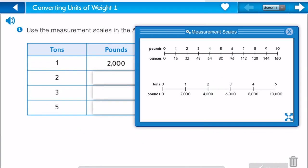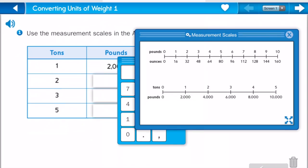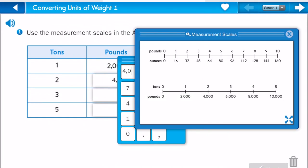So if we want to know what two tons equals, we just look on over to number two, and we see that it equals 4,000 pounds. Remove that, 4,000.